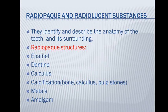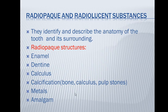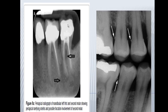Radiopaque structures include enamel, dentin, calculus, calcification, bone, pulp stones, and metals like gold and amalgam — all appear white. For example, you can see here a filling and gutta-percha appearing white in color — these are radiopaque. Amalgam fillings will also appear radiopaque.